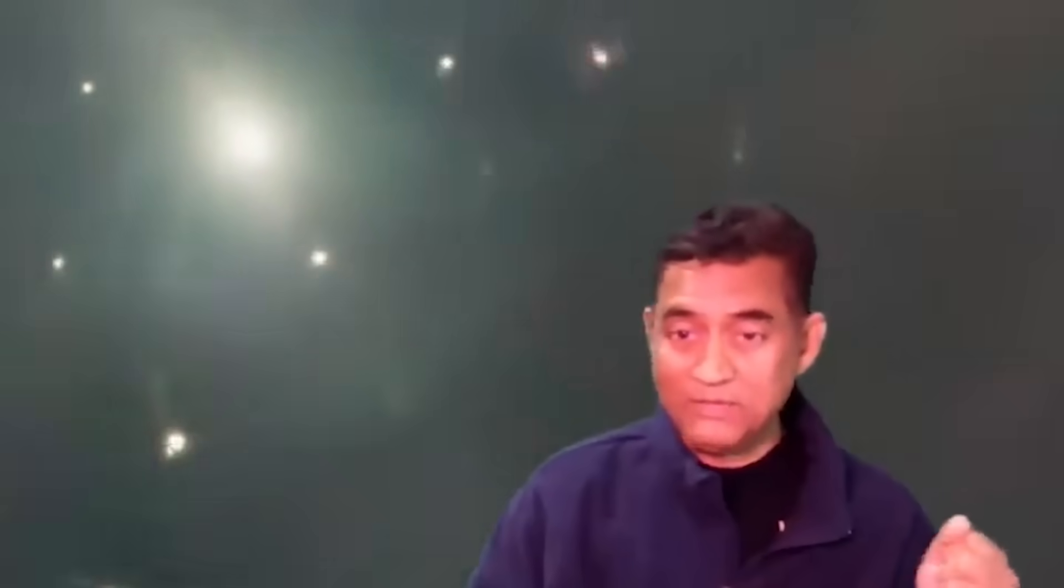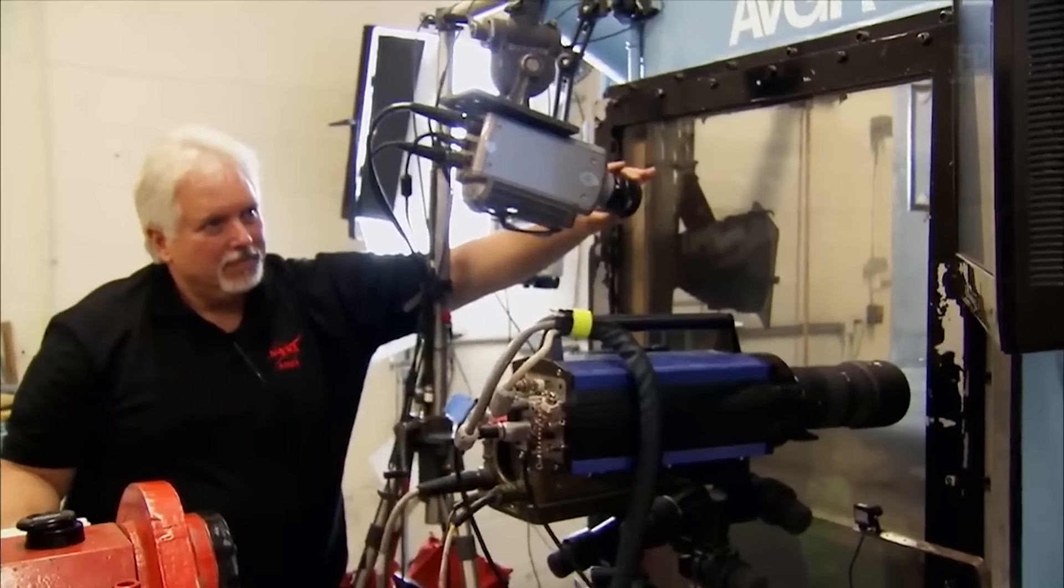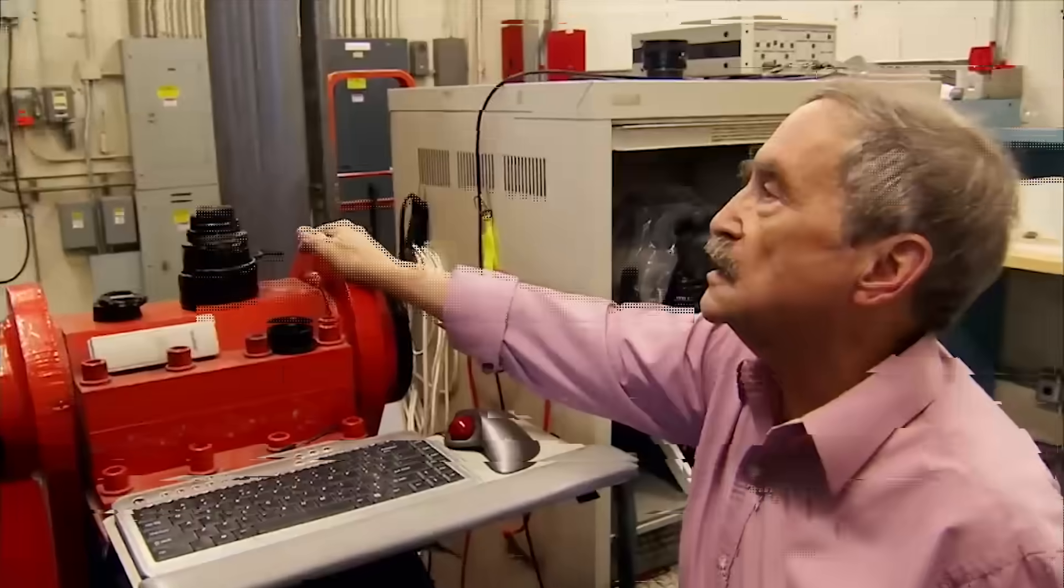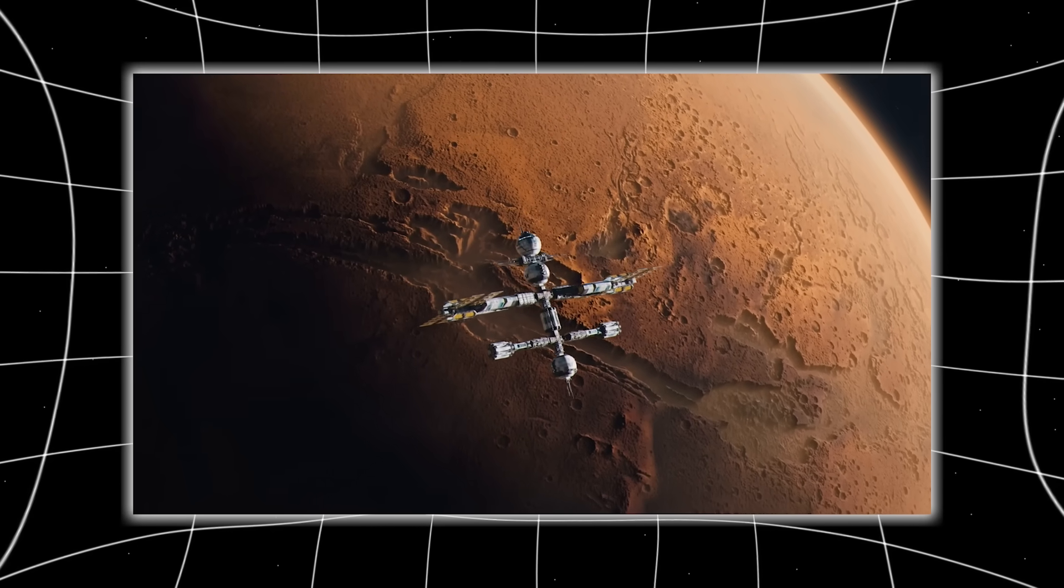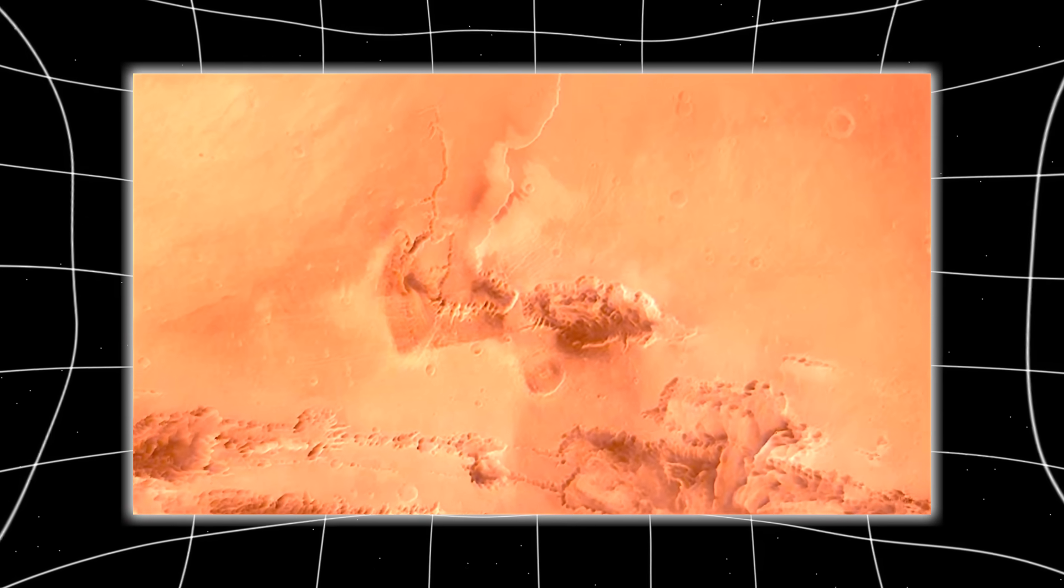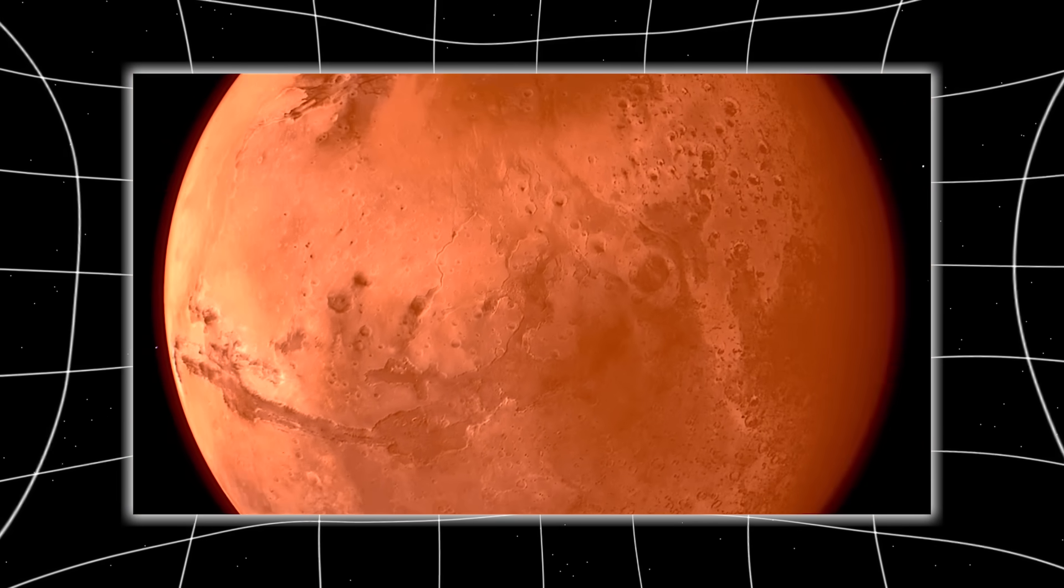Ray argues that NASA's failure to emphasize these images wasn't a conspiracy, just a communication failure. A comet bigger than Earth's diameter, captured alongside Mars, is the kind of evidence that transforms public understanding instantly. Yet the images were quietly released after the press conference rather than showcased during it. Ray believes this was a mistake because these visuals could have reframed the entire conversation.